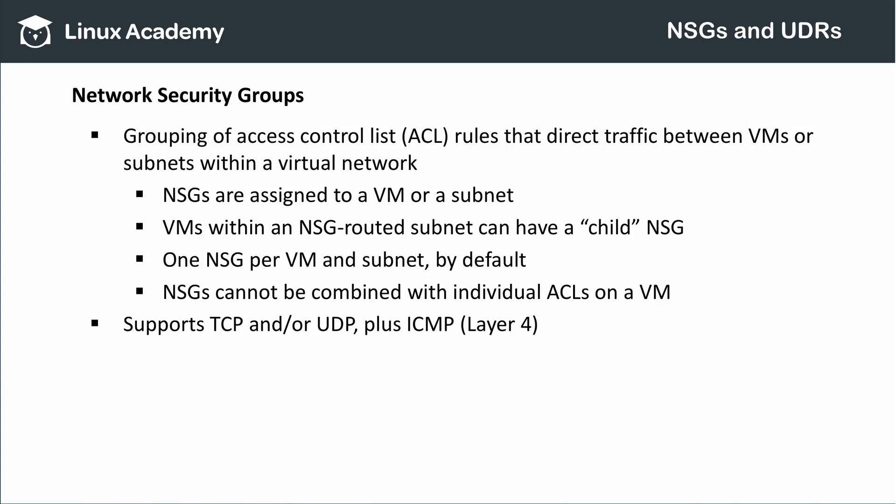In Azure, you control network access to an endpoint — be it a virtual machine or a subnet — via an access control list rule. When you group these individual access control list rules together to create a comprehensive, priority-based approach, it's called a network security group. In the Azure Resource Manager deployment model, network security groups are the primary means of controlling network access. Each network security group is assigned to a subnet or, occasionally, a virtual machine. Each subnet or virtual machine can only have one network security group assigned to it by default, but a virtual machine inside a subnet with an NSG can have its own VM-specific child network security group.